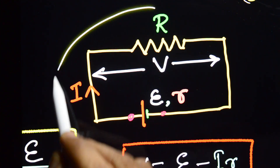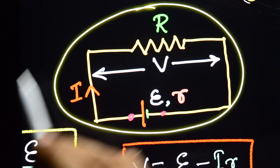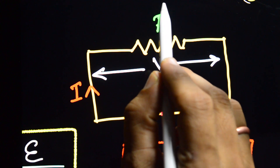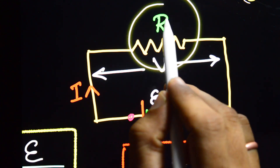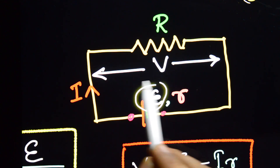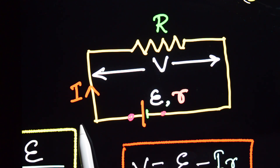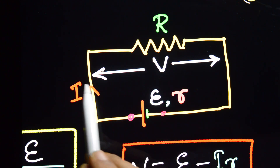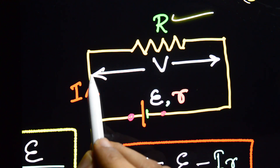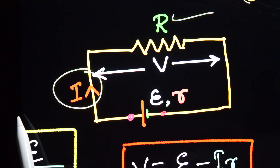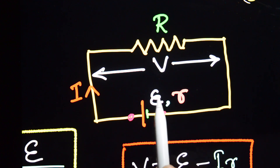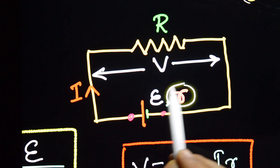This is a circuit. There is an external resistor with resistance R, and a cell whose EMF is E. There is also a resistor, current I, and the internal resistance of the cell is small r.